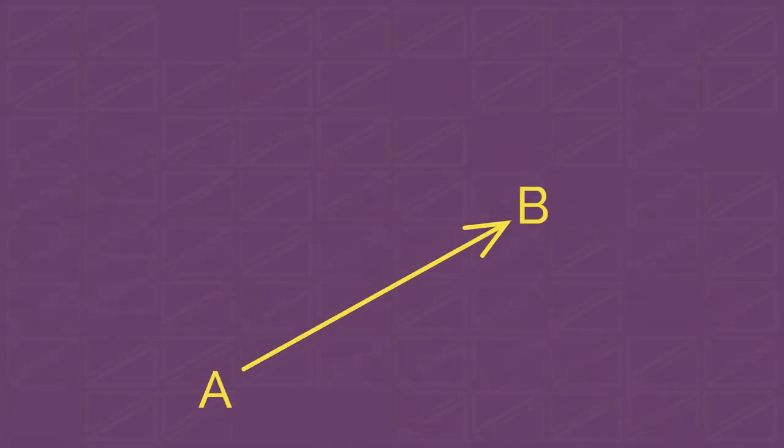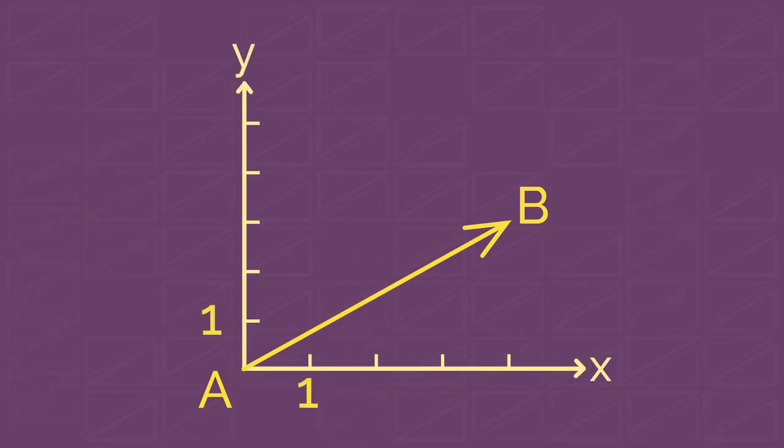So what can we do with vectors? Let's put this one on a coordinate plane. We can put it anywhere, but for now, let's move it so its tail has coordinates (0,0). If the coordinates of the tail A is (0,0), then the coordinates of the vector AB are coordinates of its head, B.